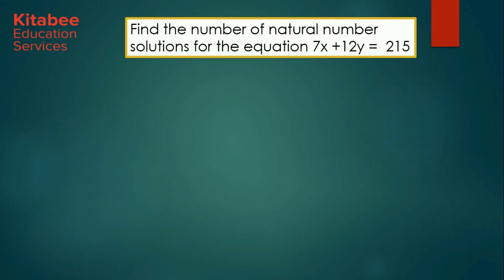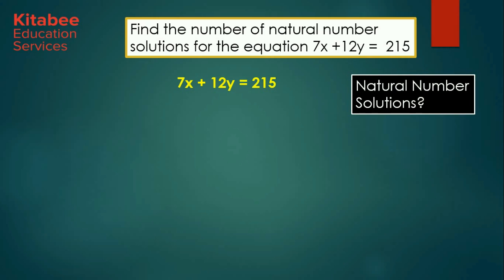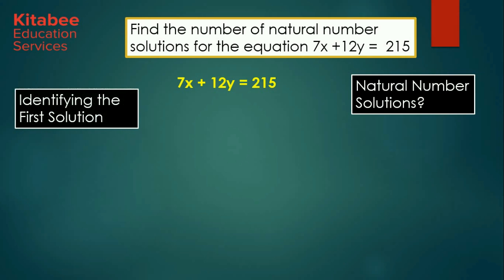Let's find the number of natural number solutions for the equation 7x plus 12y equal to 215. The values of x must be in arithmetic progression with common difference 12 — the coefficient of y — and values of y with common difference 7 — the coefficient of x. The first step in solving any special equation is to identify the first solution, and then based on the common difference concept, we can determine the total number of solutions.